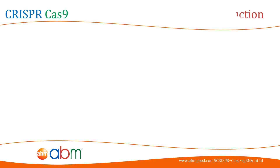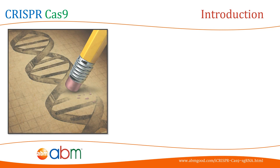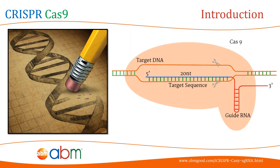The CRISPR-Cas9 system has taken the world of gene editing by storm and has become the go-to technique when it comes to mutating and editing DNA in life science research. The beauty of the CRISPR-Cas9 system is that it only requires two components: a Cas9 enzyme to snip target DNA, and an RNA molecule called the single-strand guide RNA that directs the Cas9 enzyme to the precise spot through complementary DNA pairing.